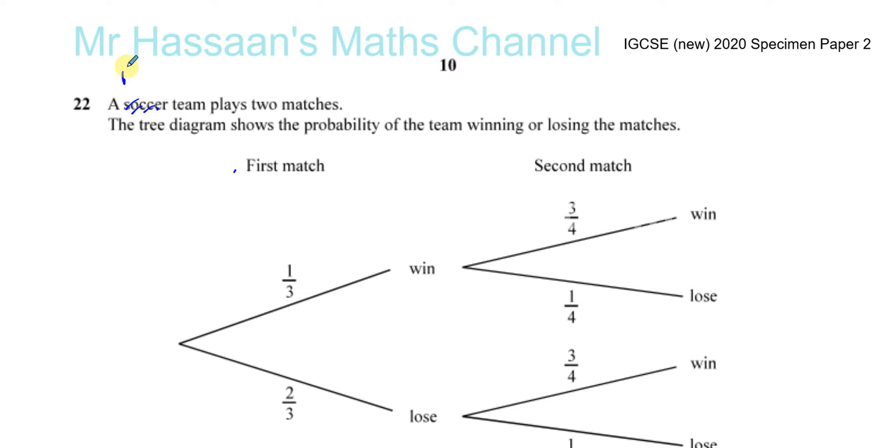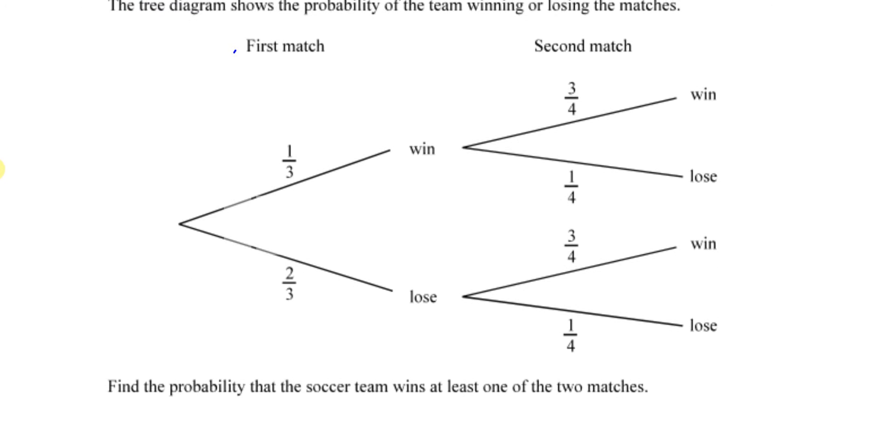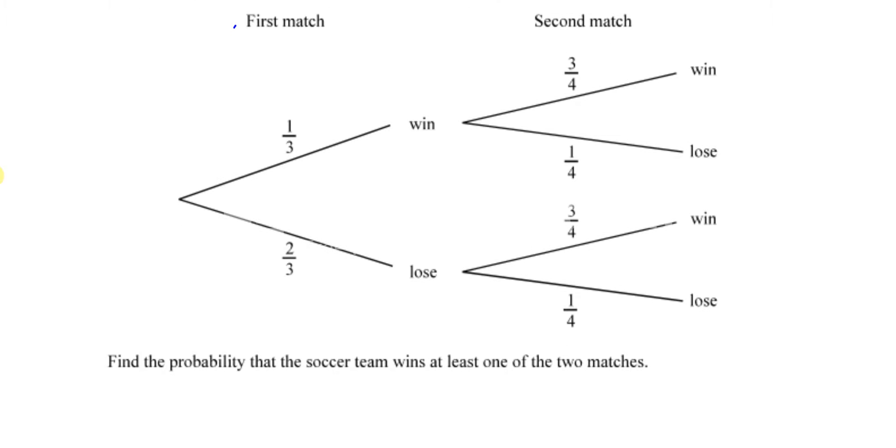Let me change it to football team from England. The tree diagram shows the probability of the team winning or losing the matches. The probabilities are all filled in for you. You've got the first match and the second match.